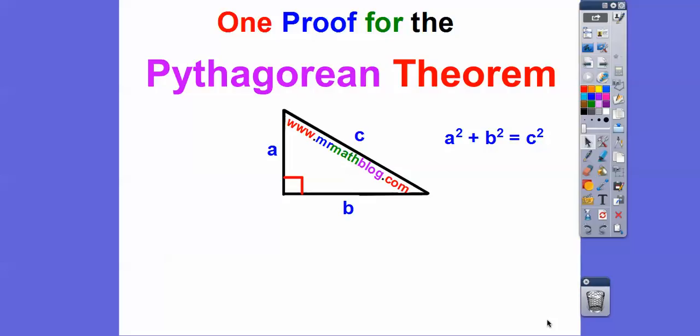Hey everybody, this is Mr. MathBlog. This lesson is just one proof — there are thousands of them, thousands of unique proofs of the Pythagorean theorem. This is a nice visual proof that I like to show to my students. It deals with the right triangle and we're going to show a visual proof that A squared plus B squared equals C squared.